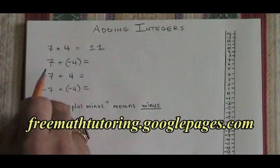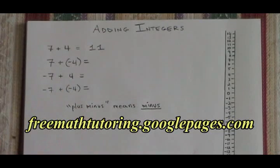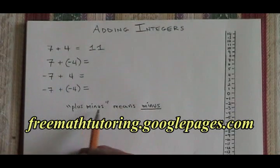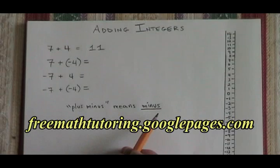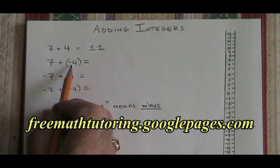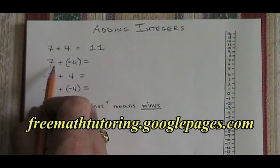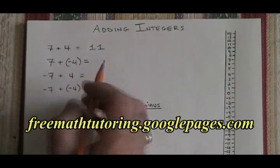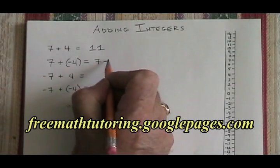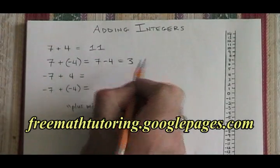But if we have 7 plus negative 4, we have to know this little rule: plus minus means minus. Adding a negative is the same as subtracting. So 7 plus negative 4 is the same as 7 minus 4, which is 3.